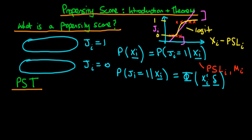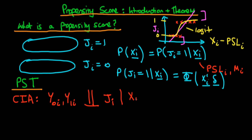The propensity score theorem is a corollary to the conditional independence assumption. Just to remind ourselves, the conditional independence assumption is that the potential values of the outcome variable — the level of sales if an individual didn't receive on-the-job training, and the potential level of sales if they did — are conditionally independent of the treatment when we condition on the list of important covariates.